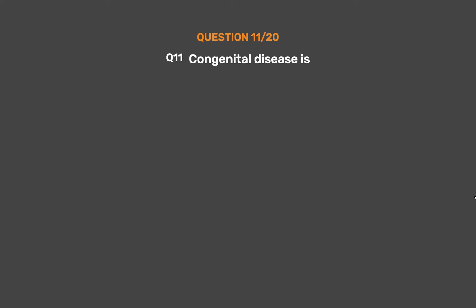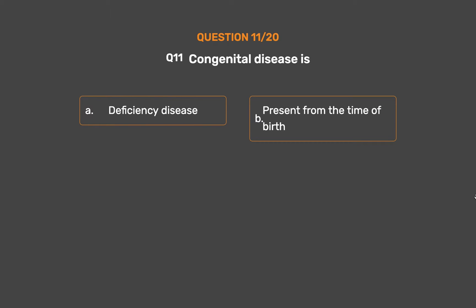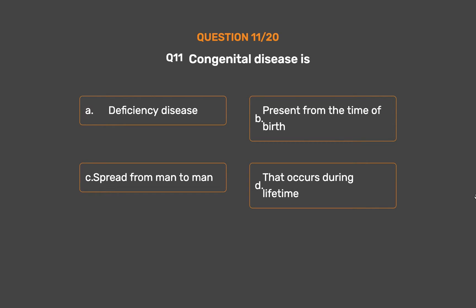Question number 11. Congenital diseases: Option A: Deficiency disease. Option B: Present from the time of birth. The correct answer is Option B: Present from the time of birth.